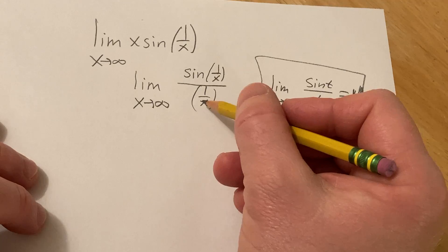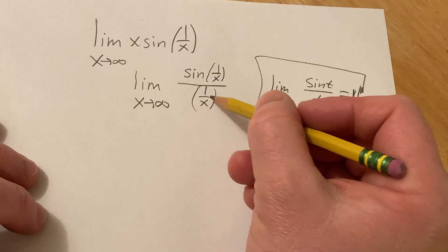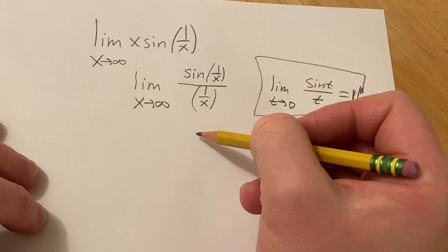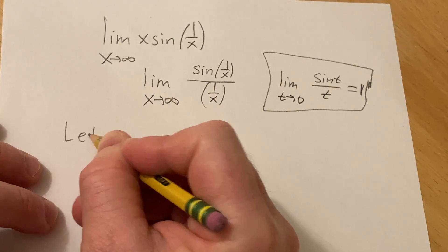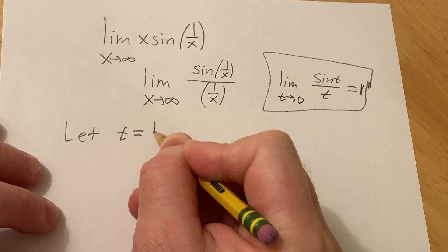So the reason that this reminds me of this is because as x approaches infinity, 1 over x approaches 0. So we can make a substitution. We can let t equal 1 over x.